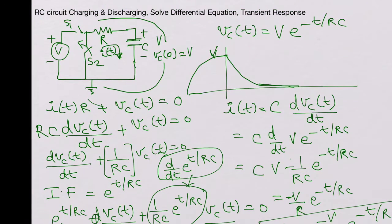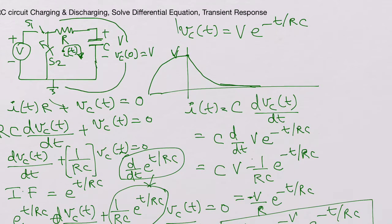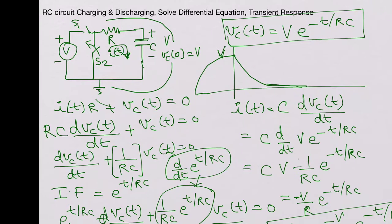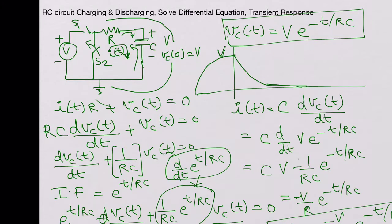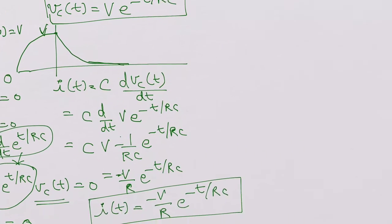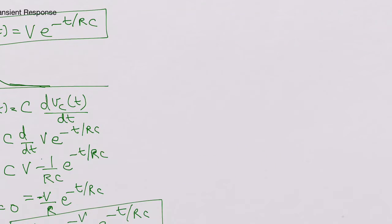So Vc(t) is discharging and the current has reversed direction. It is not flowing into the capacitor from the top plate — it is actually flowing backwards, out of the capacitor through the resistor, discharging the capacitor.